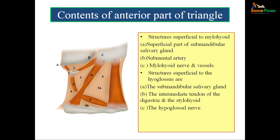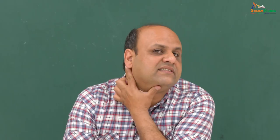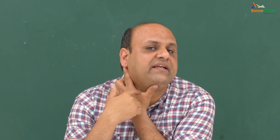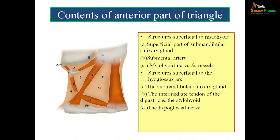Structures lying superficial to the hyoglossus include the submandibular salivary gland, the intermediate tendon of the digastric — which lies between the anterior and posterior bellies in relation to the hyoid — the stylohyoid muscle, and the 12th cranial nerve. These are the contents of the anterior part of the digastric triangle, divided by whether they are superficial to the mylohyoid or superficial to the hyoglossus.